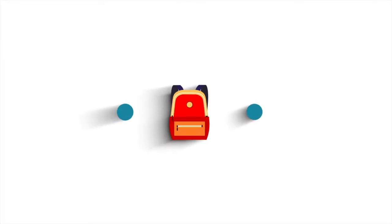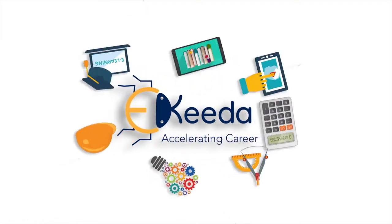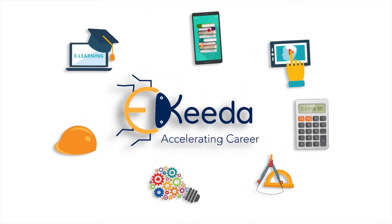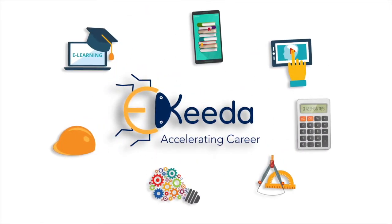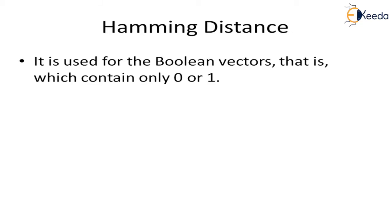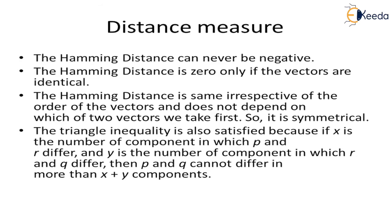Hamming distance. Hamming distance is used for Boolean vectors, that is, which contains only 0 or 1.